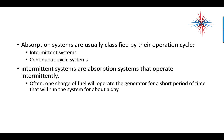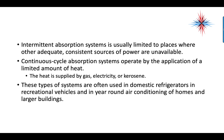Absorption systems are usually classified by their operation cycle — intermittent or continuous. Intermittent systems operate intermittently; often one charge of fuel will operate the generator for a short period of time that will run the system for about a day. Intermittent absorption systems are usually limited to places where other adequate, consistent sources of power are unavailable.